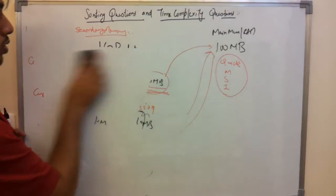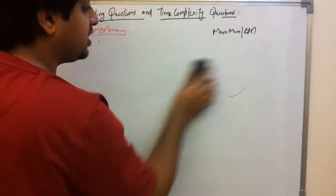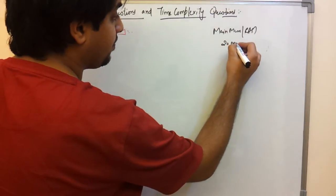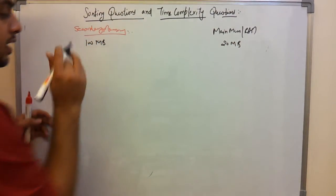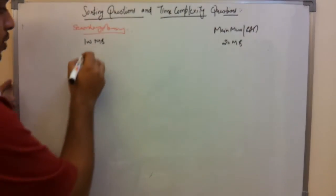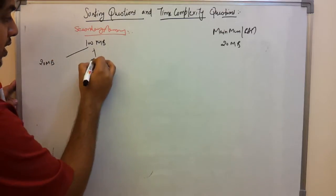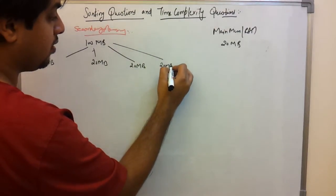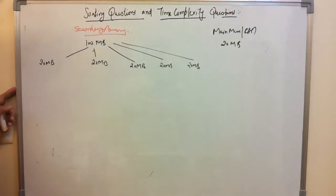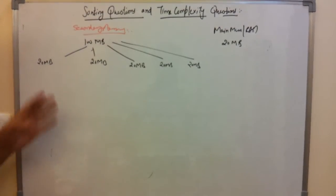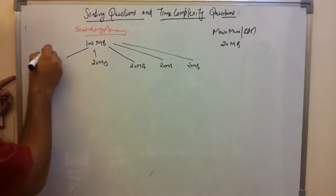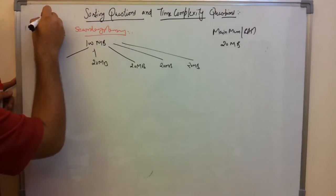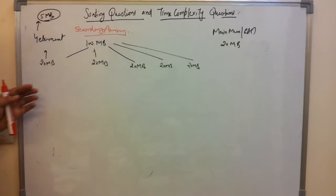Now let's look at a small example. My main memory is 20 MB and my data is 100 MB. I divide the 100 MB data into 5 groups of 20 MB each: 20 MB, 20 MB, 20 MB, 20 MB, and 20 MB.